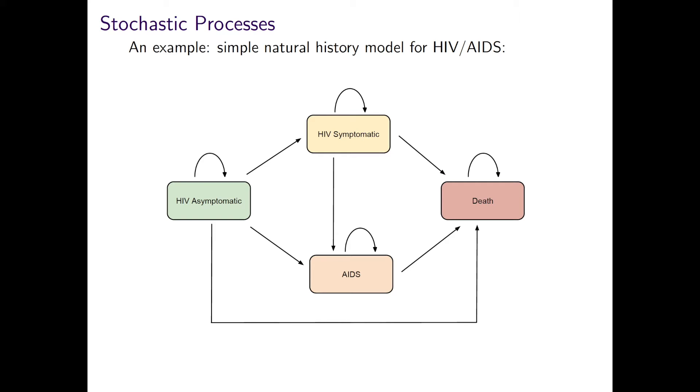An individual patient makes transitions between these states as their health deteriorates with the disease over time. At each increment of time, which could be say a month or a year, an asymptomatic patient, for instance, may with a certain probability remain asymptomatic, or they could move to the symptomatic state, or they could move to AIDS or even die from other causes.